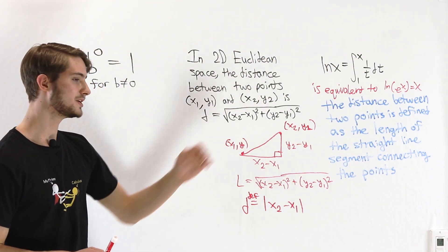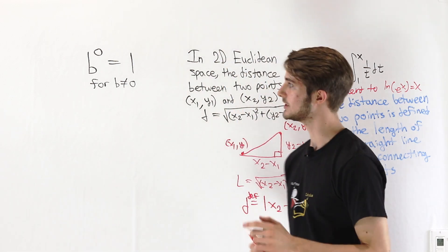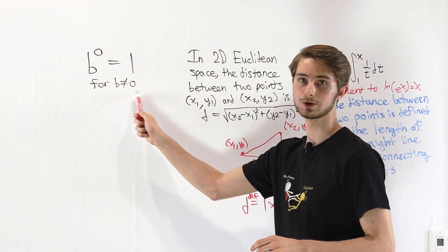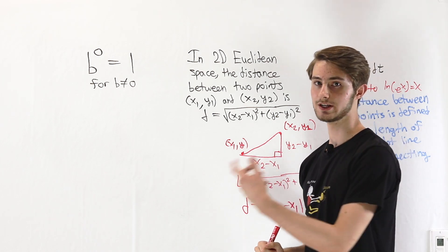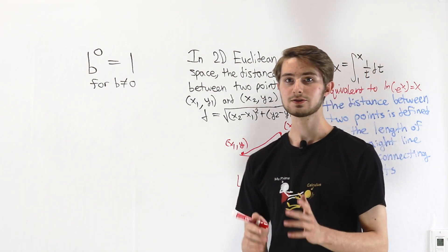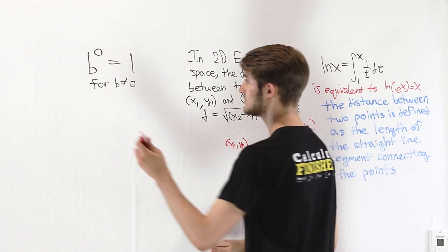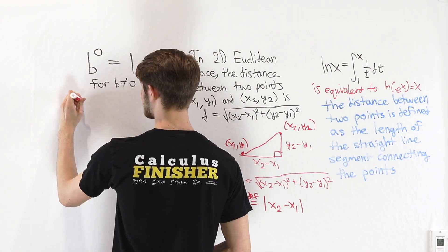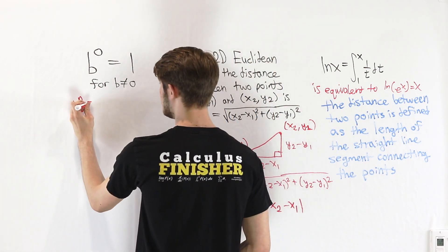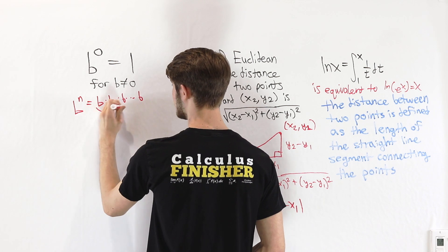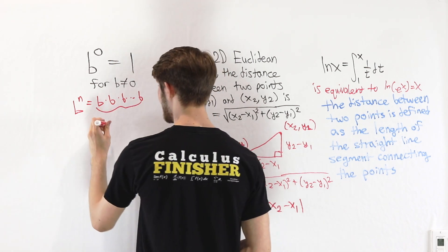So now that we've done these two examples, it's time to get back to our original question. b to the 0 equals 1 for non-zero b, is that a definition or a theorem? The exponential function in the way we're thinking about it here was originally defined where we would have b to some positive integer n being b times b times b and so on, where we would multiply n times.